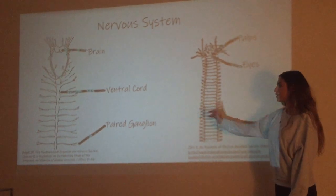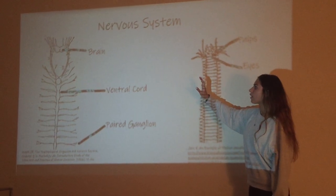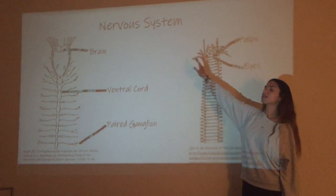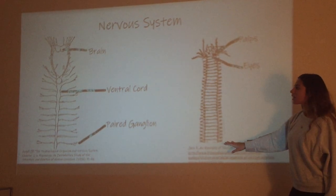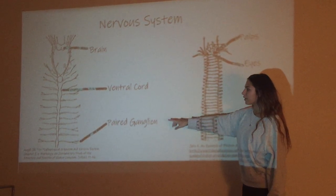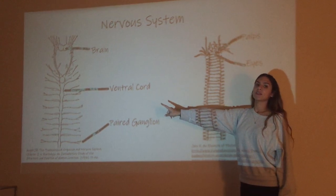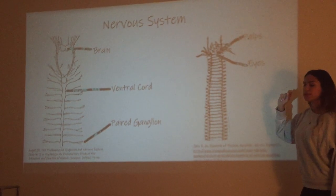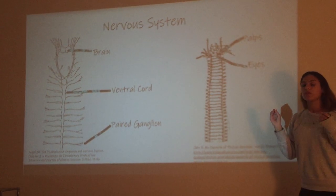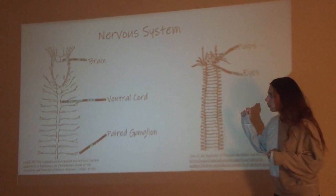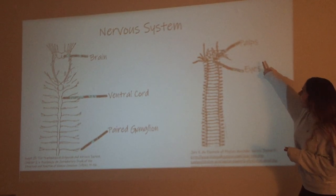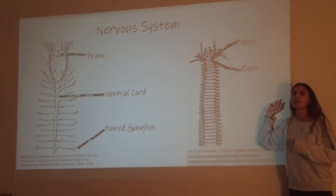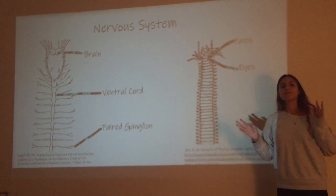Now we have the nervous system, and there are two diagrams here to look at. These polychaetes are controlled by one brain, and attached to that brain is the ventral cord, which runs from the head all the way to the last segment. From the ventral cord, there's going to be a paired ganglion coming out on each side and out towards each segment of the worm, which allows nerves to be supplied to all the organs needed for survival. As previously mentioned, there are eyes and palps in the head, which are sensory organs that help them find food, be aware of predators, and have a sense of the environment around them.